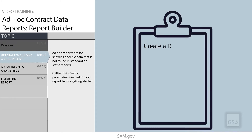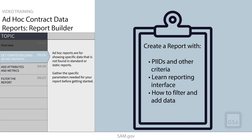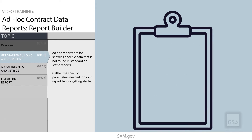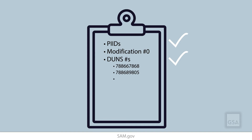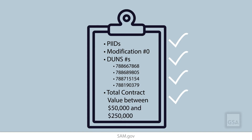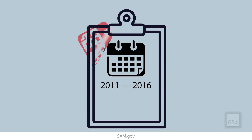In this video, we will create a report for the use case of pulling PIDs that meet specified criteria, and in doing so, we will cover the reporting interface, filtering, and adding data to our report. For this report, let's say we have received the following request: we would like to see all base PIDs where the modification number is zero, for four vendor DUNS numbers that have a base and all options value, or total contract value, between $50,000 and $250,000. We want this information for fiscal years 2011 through 2016.